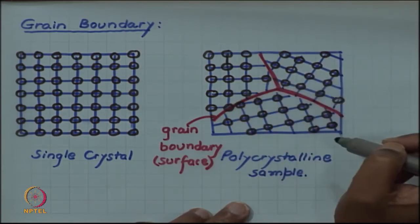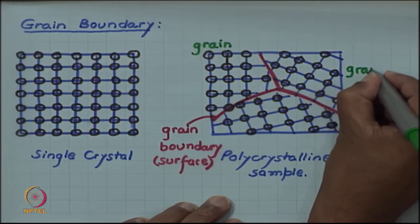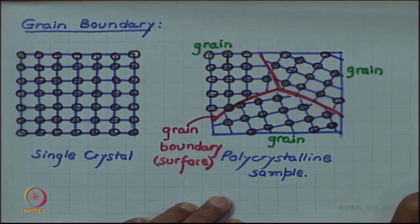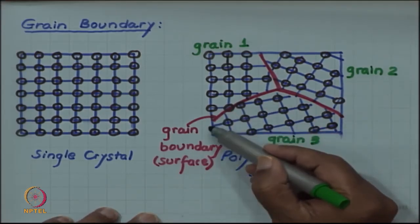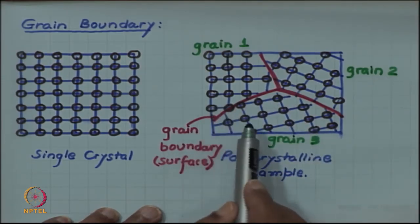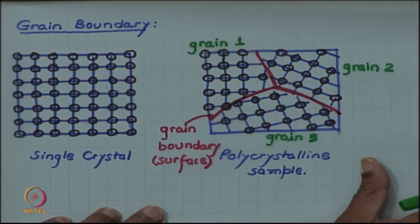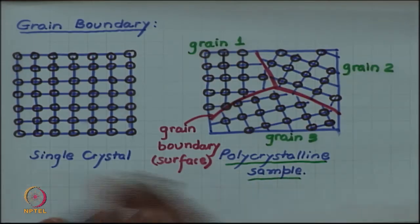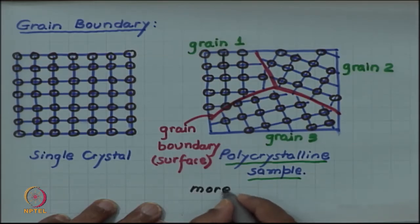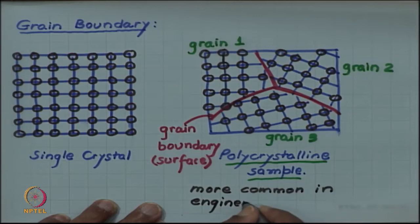The different regions which are divided by the grain boundary are themselves called grains. So this is a grain, this is another grain, and this is another grain — in my picture there are three grains: grain 1, grain 2, and grain 3. This particular boundary is a grain boundary between grain 1 and 3; this one is a boundary between 2 and 3; and this one is a boundary between 1 and 2. There can be several grain boundaries and several grains in the same sample, and this kind of sample is called a polycrystalline sample — more common in engineering materials.